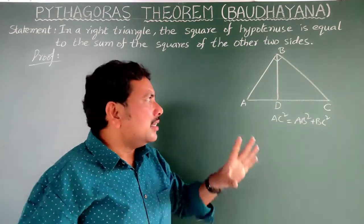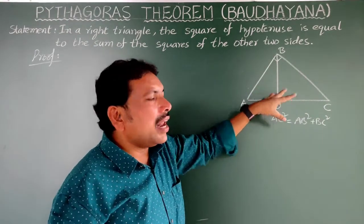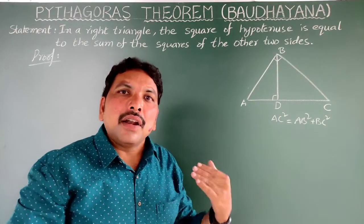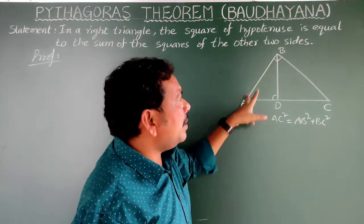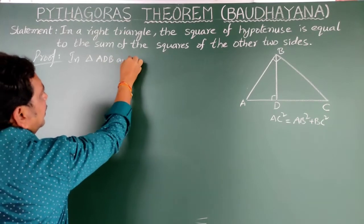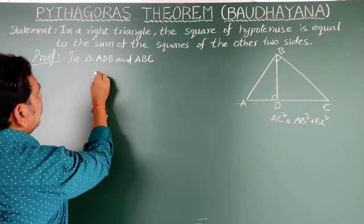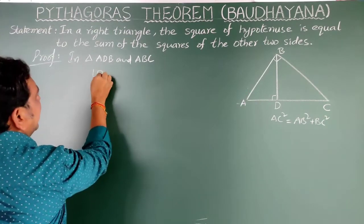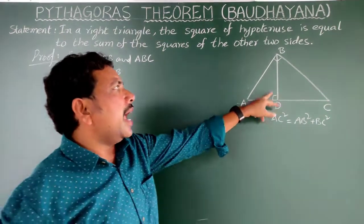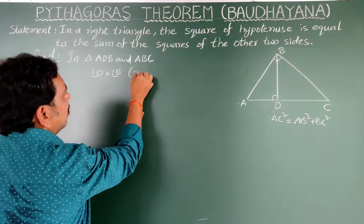First, compare triangle ADB and triangle ABC. In triangle ADB and triangle ABC: angle D is equal to angle B — both are 90 degrees, because BD is perpendicular to AC and the right angle of the big triangle is at B. So angle D = angle B = 90°.